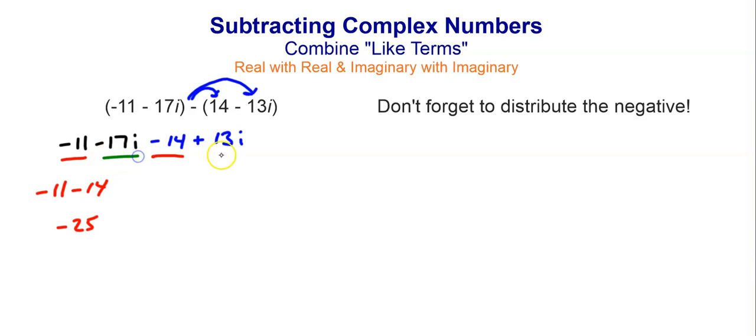And then, now I look at the imaginary ones. I have i and i. I have a negative 17i plus 13i. So negative 17i plus 13i is going to just give me negative 4i. So the answer is just negative 25 minus 4i. This is just like when we did it with variables in Algebra 1.